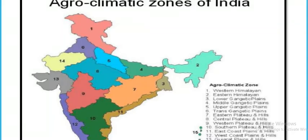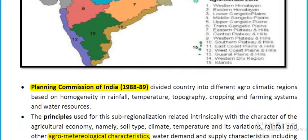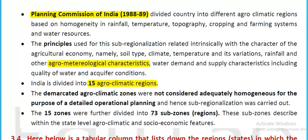The 15 agro-climatic zones are: Western Himalayan Zone, Eastern Himalayan Zone, Lower Gangetic Plains, Middle Gangetic Plains, Upper Gangetic Plains, Trans-Gangetic Plains, Eastern Plateau and Hills, Central Plateau, Western Plateau and Hills, Southern Plateau and Hills, Eastern Coastal Plains and Hills, Western Coastal Plains and Hills, Gujarat Plains, Western Dry Region, and Lakshadweep Islands. The Planning Commission in 1988 divided the country into these regions based on homogeneity in rainfall, temperature, topography, cropping and farming systems, and water resources.